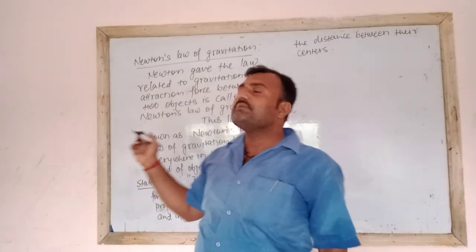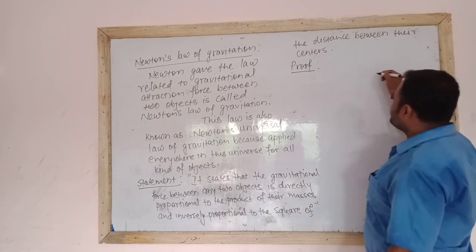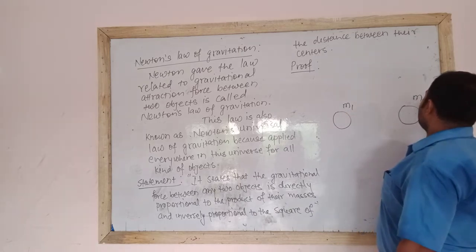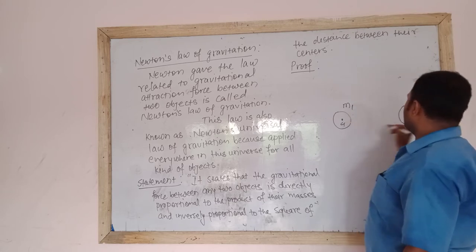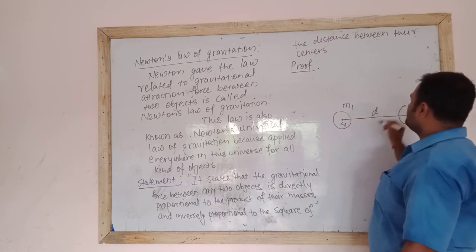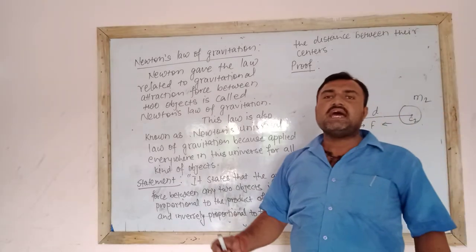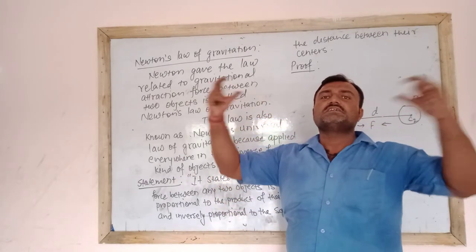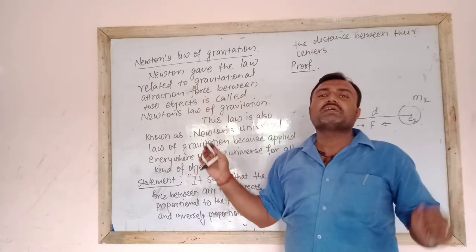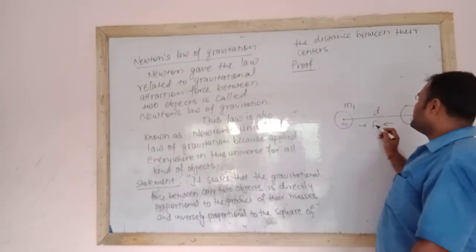To prove it, firstly we consider two objects of masses M1 and M2, having centers C1 and C2. The distance between their centers is D. Gravitation is a mutual attraction force because it acts towards the center of both objects — mutual means directed towards the center of both objects. Therefore, gravitation is known as a mutual attraction force.